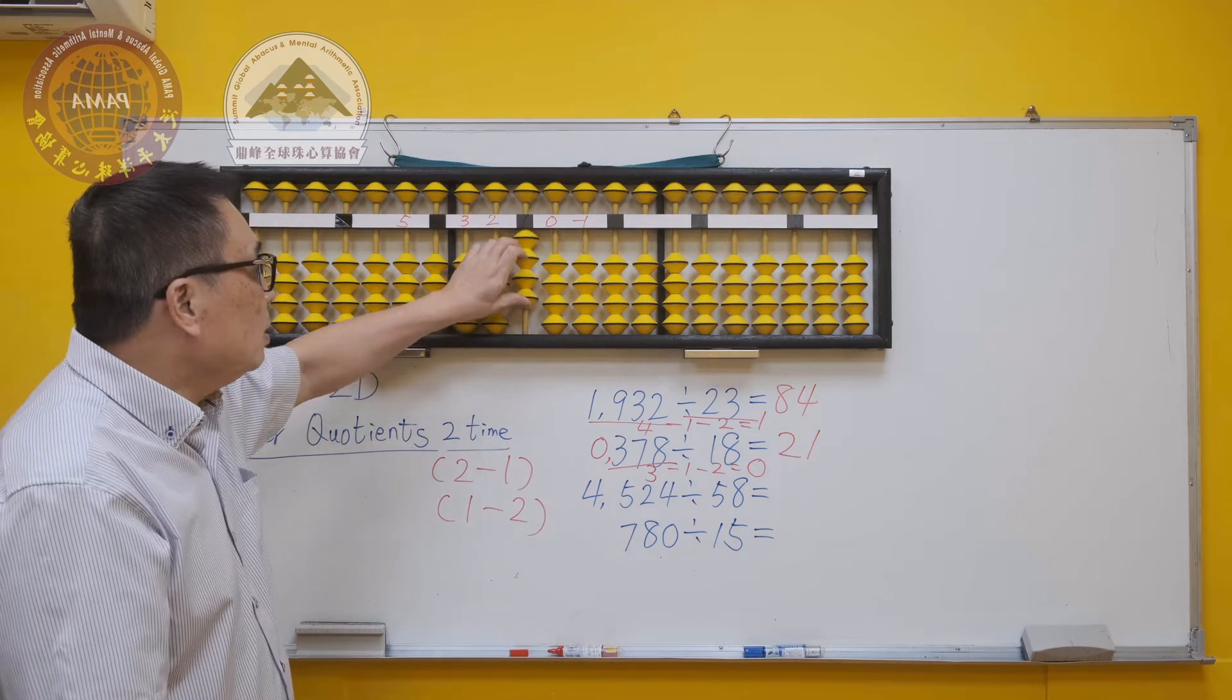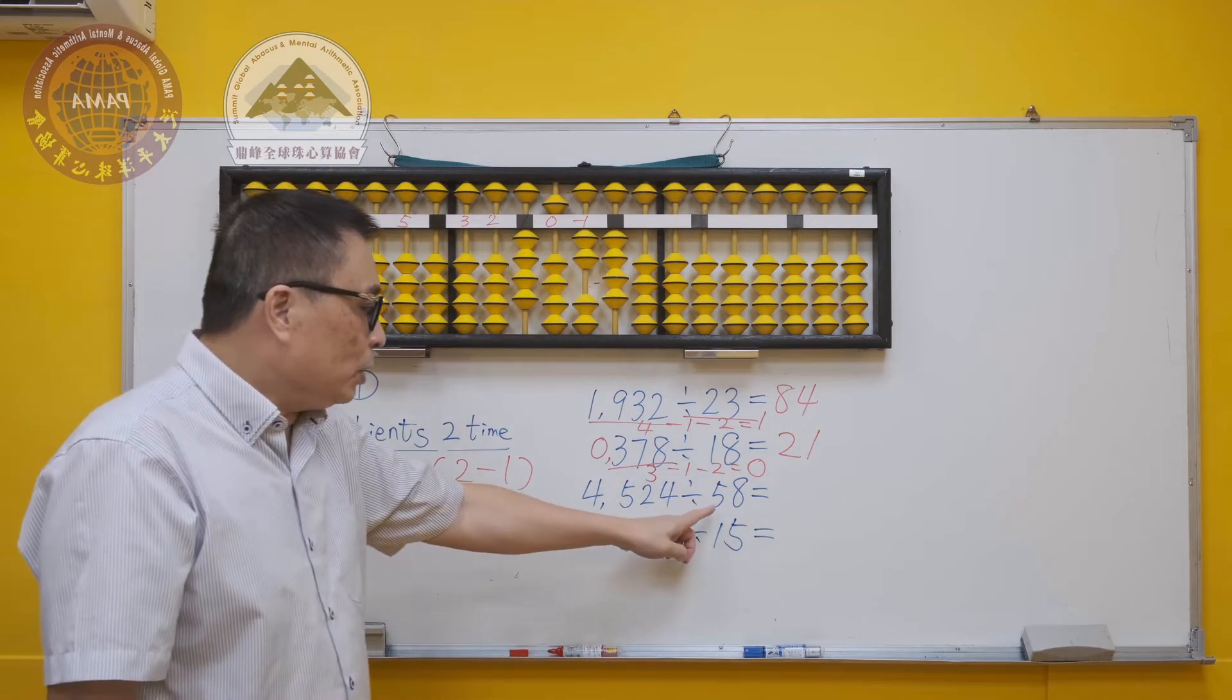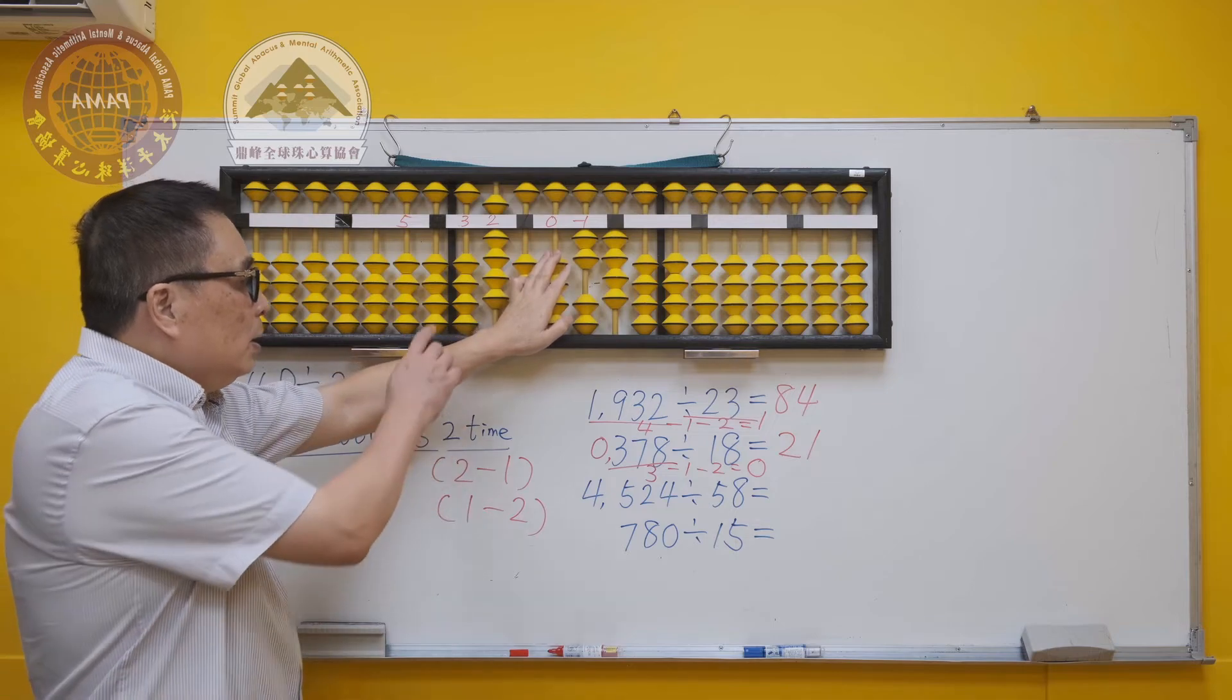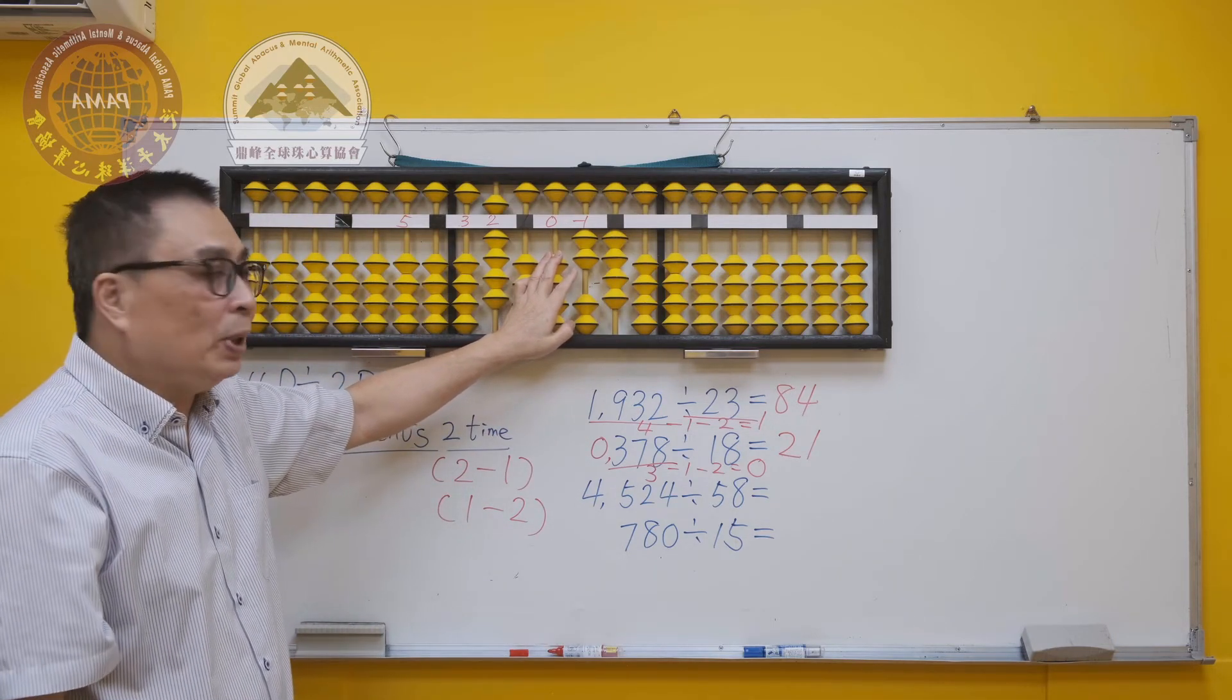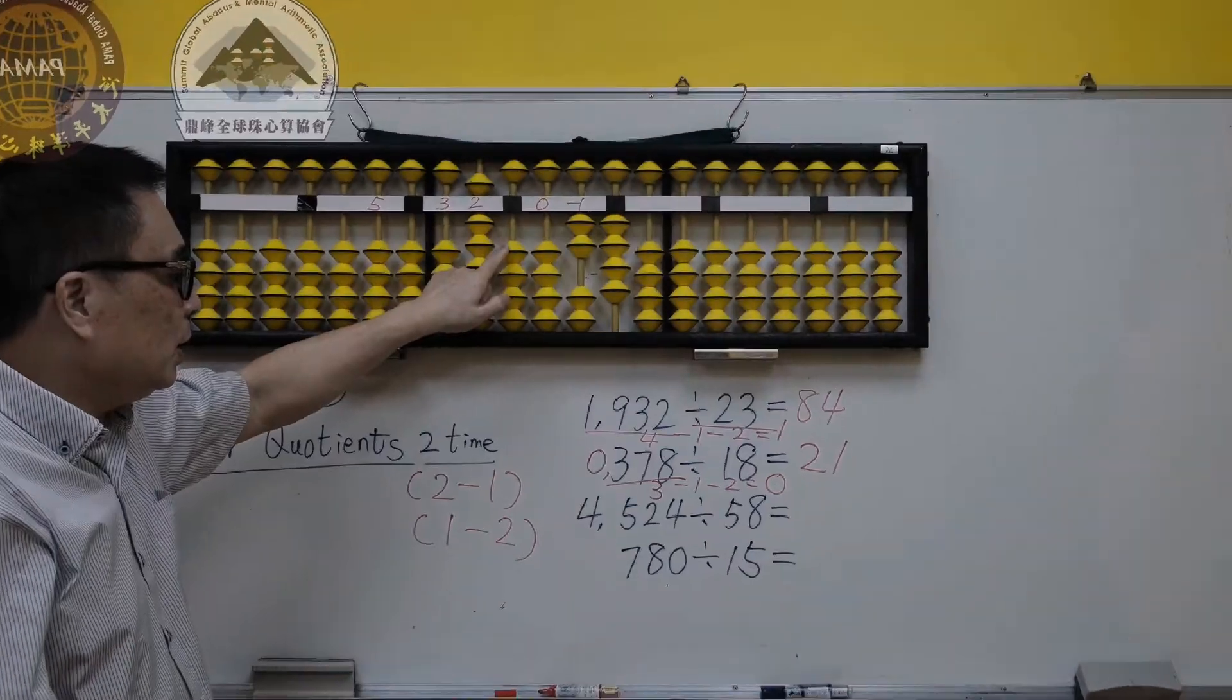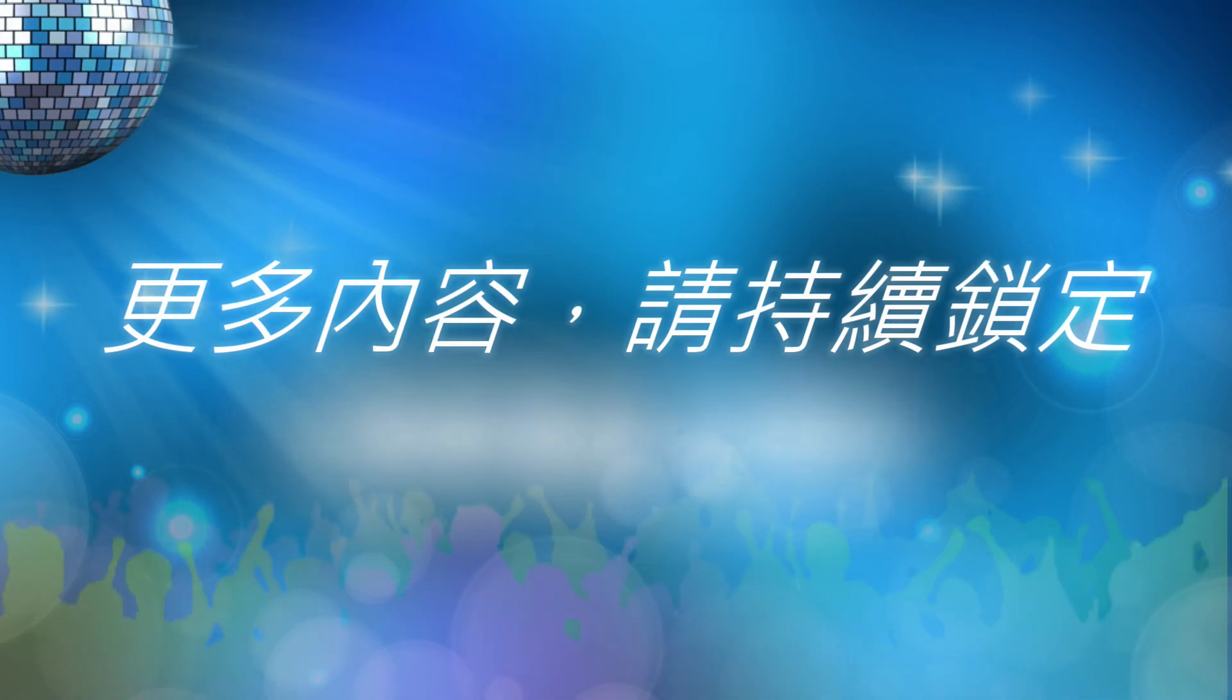Place the dividend 4524 on the starting point 1. 5 times 9 is 45. But we are not sure if 9 times 8, which is 72, is enough to minus. In this case, it is not enough. If we minus one time, skip one rod...